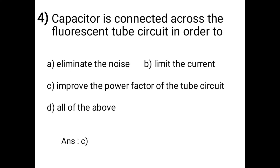These MCQs are important for the utilization of electrical engineering and illumination and electrification. Question 4: A capacitor is connected across the fluorescent tube circuit in order to: A - eliminate the noise, B - limit the current, C - improve the power factor of the tube circuit, D - all of the above. The answer is option C: improve the power factor of the tube circuit.